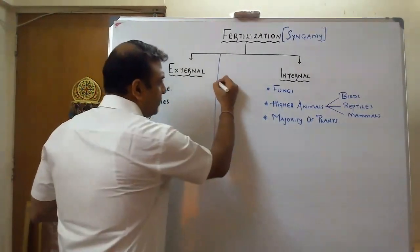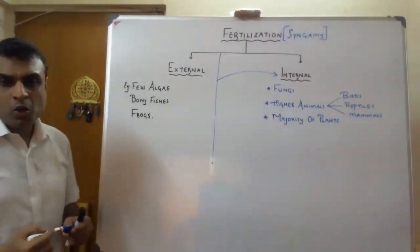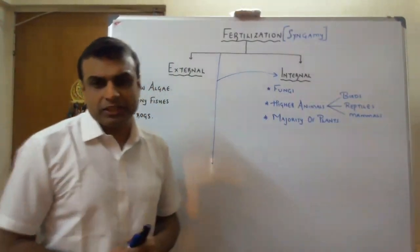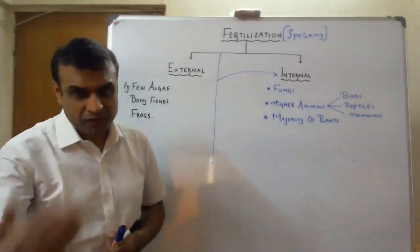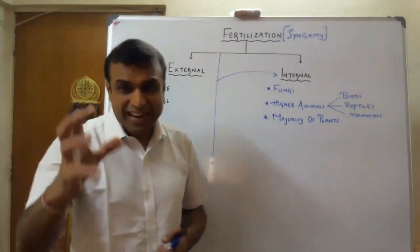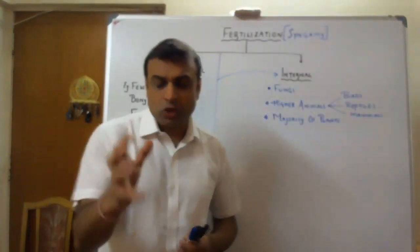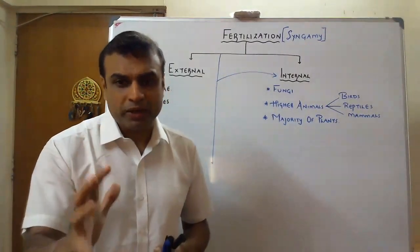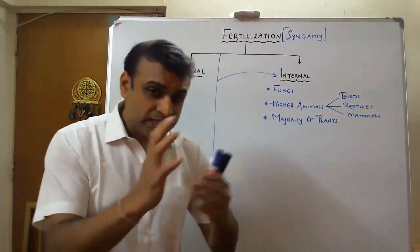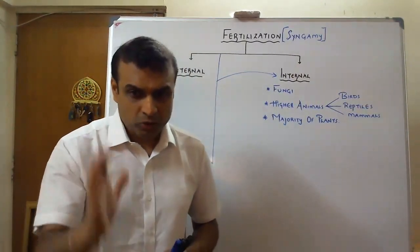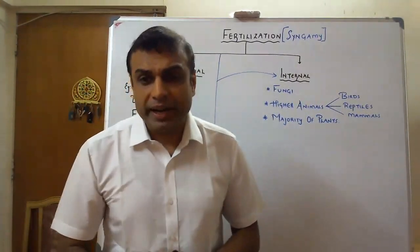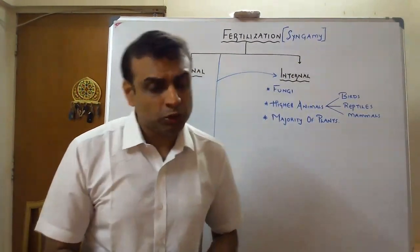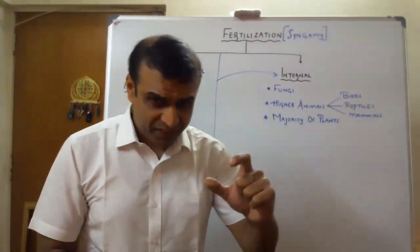Evolution led to a new type of fertilization called internal fertilization. Internal fertilization is very safe because the ovum or egg is always present inside the body of the female, so that egg is 100% protected from predators. In internal fertilization, the female gamete is non-motile, whereas the male gametes are usually motile.